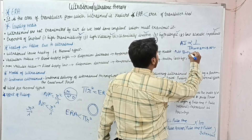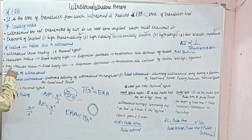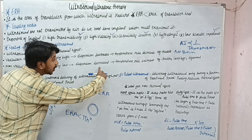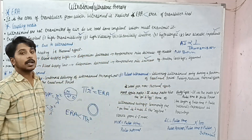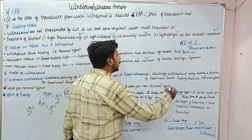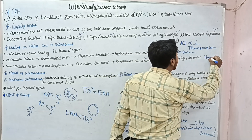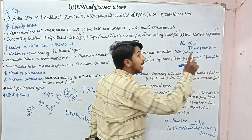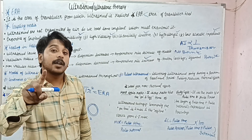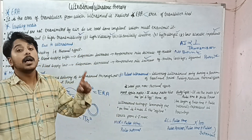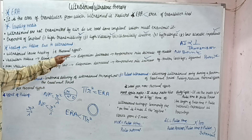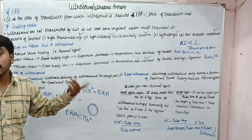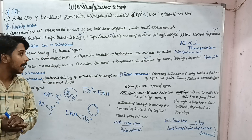But if you apply ultrasound on a non-vascular tissue where blood supply is low, dispersion is low and temperature increases rapidly. Examples are tendon, cartilage, and ligament — burn can occur here. As previously explained with shear waves, periosteal pain occurs due to periosteal burn. So for non-vascularized tissue, burn can occur.